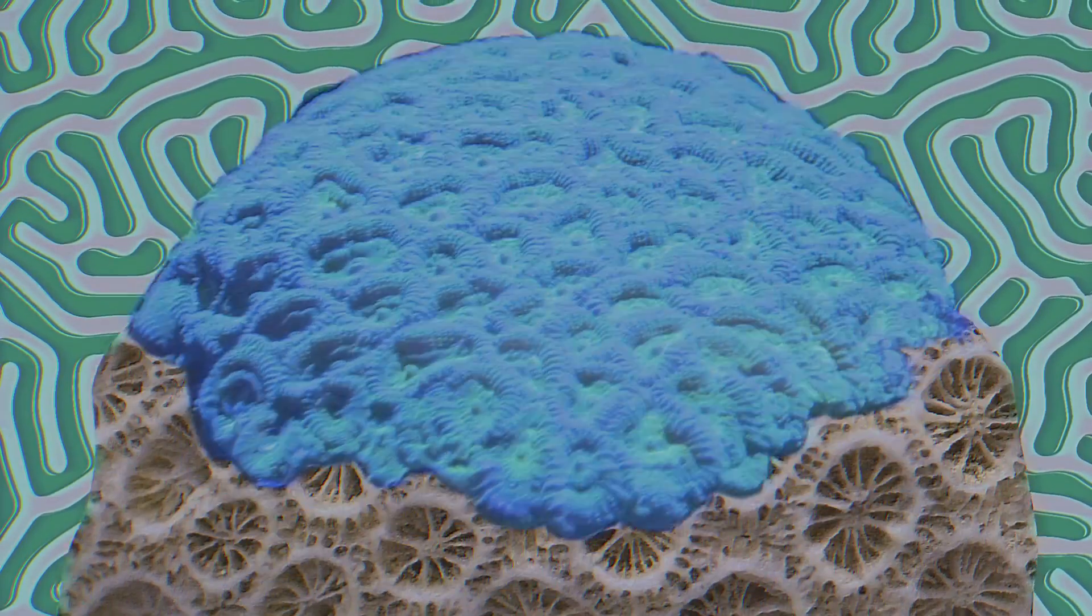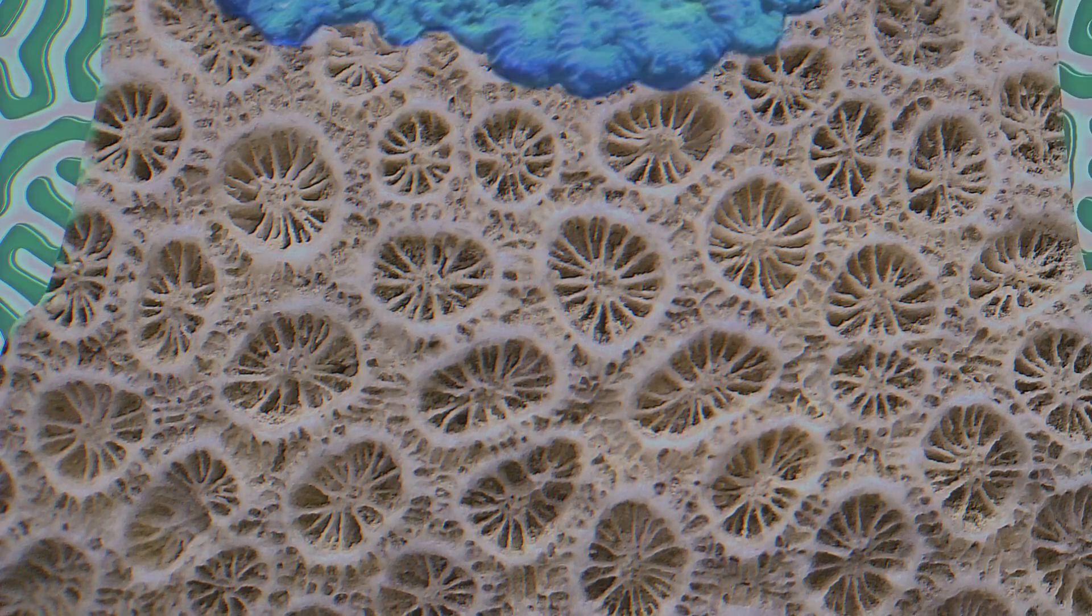As the polyp feeds and grows, it oozes out this limestone skeleton, and it grows and builds the reef millimeter by millimeter. This skeleton, this limestone skeleton, is what most people think of as coral.